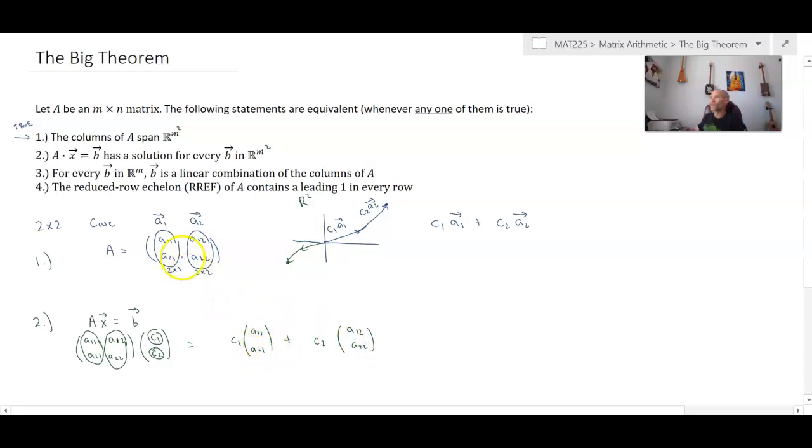Now we've already referred to A11, A21. We've called that, we've just decided to call that A1. And we've decided to call A12, A22, the vector A2. Now we can see that there's a clear connection here that geometrically, our picture suggests that we could get to anywhere in R2 that we want. That's, you know, again, when any one of these is true, we've assumed that statement one is true.